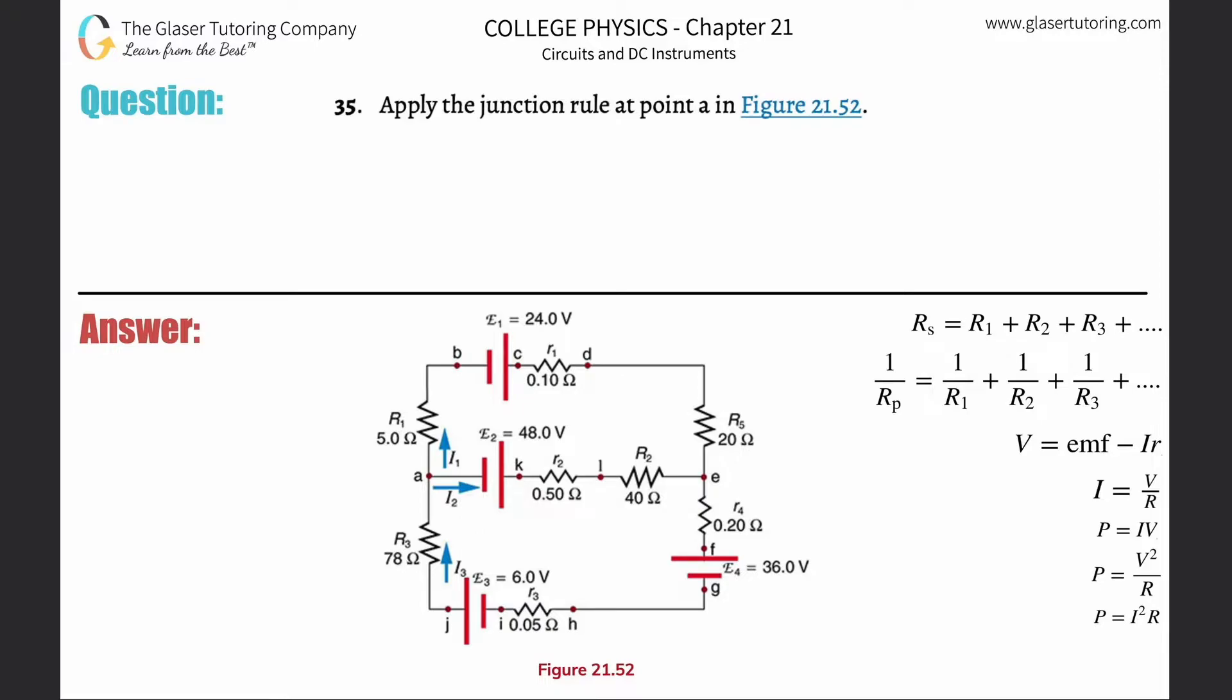Number 35: Apply the junction rule at point a in figure 21.52. All right, so here's that figure and right over here is point a. We have to apply the junction rule, which is very straightforward.